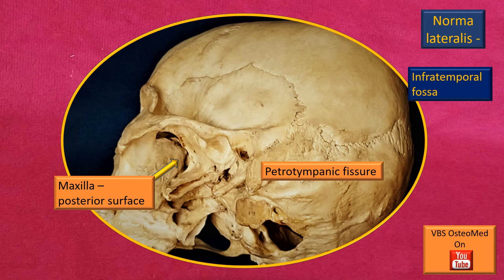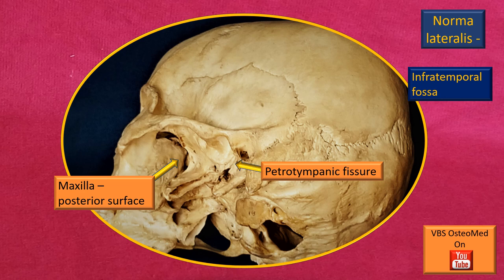Bounding the pterygomaxillary fissure and forming its anterior wall is the posterior surface of the maxilla. As you pass a probe into the pterygomaxillary fissure, you will reach the pterygopalatine fossa. The other flashing arrow refers to the petrotympanic fissure, a very important slit or gap. At this fissure, not only do two bone parts join, but there is also an edge of a third piece of bone — the petrous part of the temporal bone — located in this area.